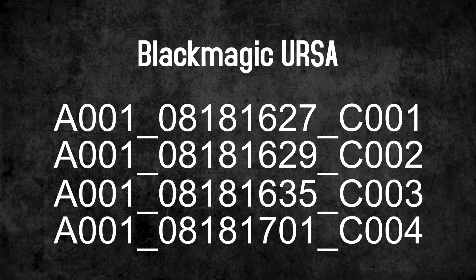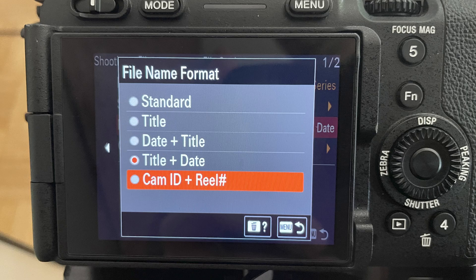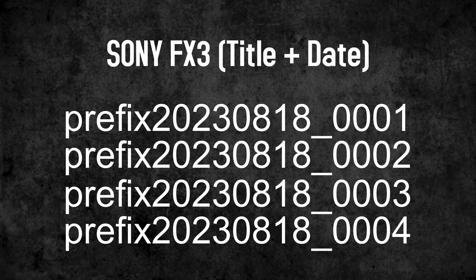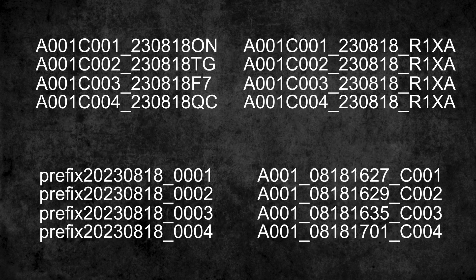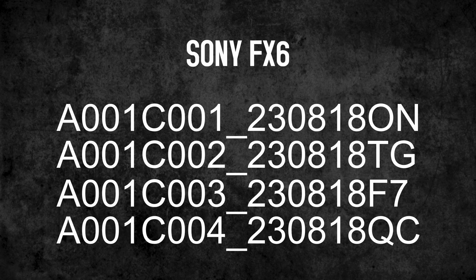Blackmagic's file naming is different — starting with the reel, followed by the date without the year but with the time, and clip number at the end. Sony's FX3 had clip naming options for a while, but it offers more choices like title and date — for example, a customizable prefix with the current date including the year, and a four-digit clip counter. As you can see, everyone has kind of their own approach. Personally, I'm not completely satisfied. I prefer the clip counter at the end to avoid searching in the middle of a filename. A mostly complete date is useful, but random digits at the end are not. If you have any idea about the purpose of those two digits, please let me know.